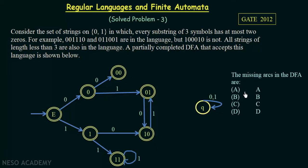We will have four options A, B, C, and D which will be shown later. But first, let us understand what kind of language is given. The strings are from zeros and ones, and in this language every substring of three symbols has at most two zeros. If you take any string and pick a substring of any three consecutive symbols, those three symbols should have not more than two zeros. If it has more than two zeros, that string will not be in the language.